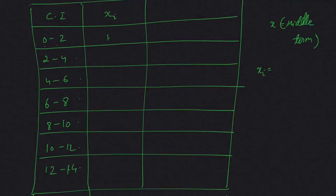The formula is upper limit plus lower limit divided by 2. That is 0 plus 2 divided by 2, which equals 1. So the middle term of the class interval - we can add the middle values. That will be 1, then 3, then 5, 7, 9, 11, and 13.